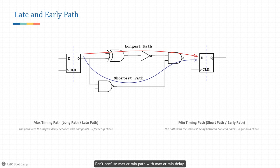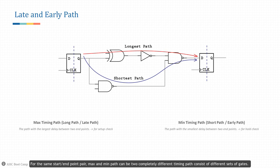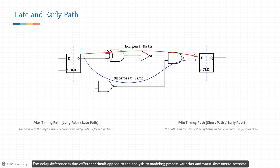Don't confuse max or min path with max or min delay. For the same start-end point pair, max path and min path can be two completely different timing paths consisting of different sets of gates. Max delay and min delay for a given cell refers to delay through the timing arc of the same cell. The delay difference is due to different stimuli applied to the analysis, to modeling process variation and worst slow-merge scenario.